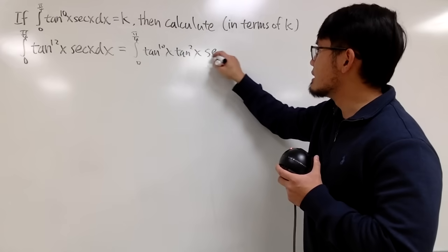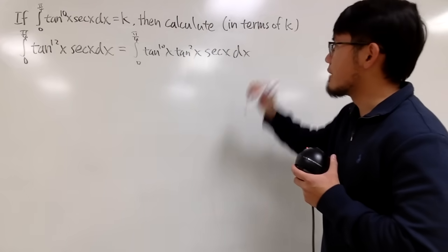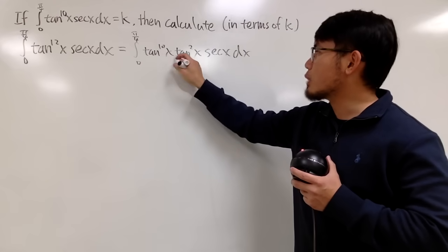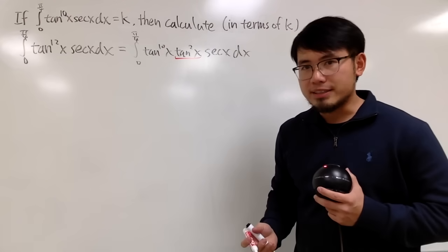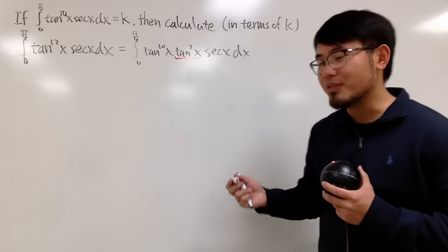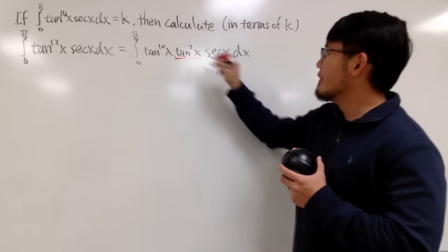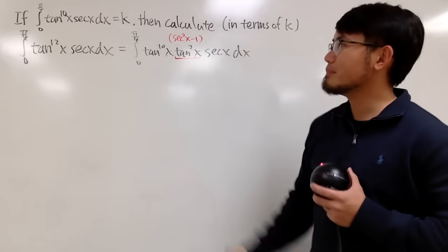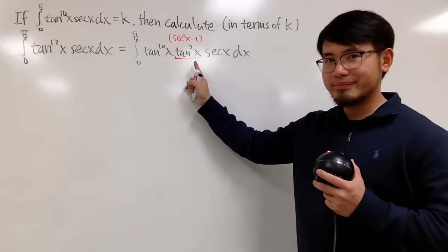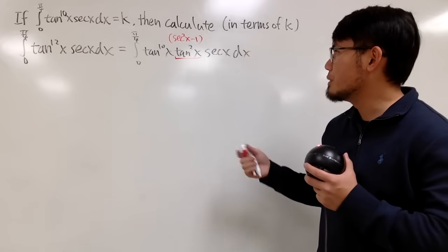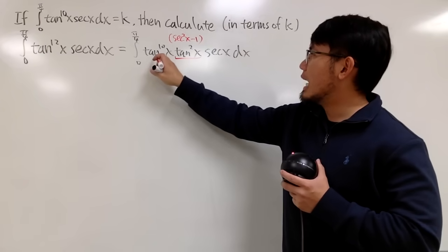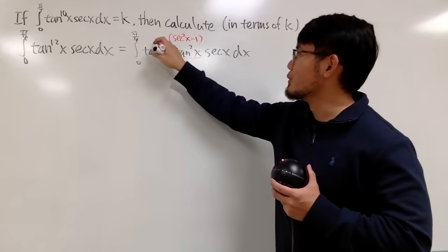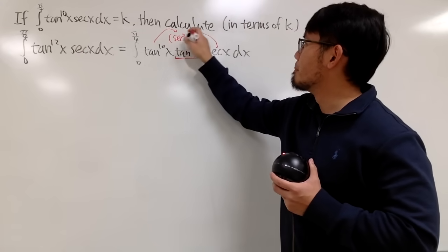After we have done that, you see this right here — tangent squared x. We can actually use an identity for this, namely secant squared x minus 1. And perhaps we'll just distribute this real quick. Notice I have this in front, this in the back. Be sure you distribute both.